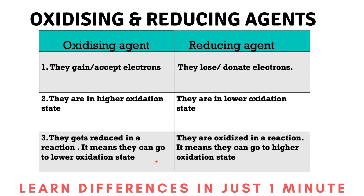Oxidizing agents get reduced in a reaction — they can go from a higher oxidation state to a lower oxidation state. Reducing agents, on the other hand, are oxidized in a reaction, meaning they go from a lower to a higher oxidation state.